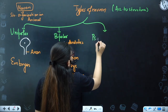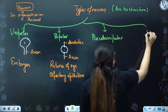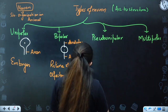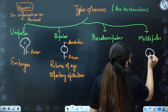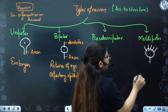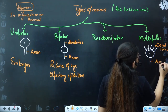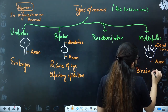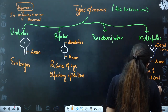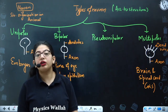Then we have another category: Pseudo-Unipolar, and another is Multipolar. Multipolar is the one we have drawn in that chapter as well. It has a lot of dendrites but one axon. Hence you call it as multipolar. Multipolar neurons are found in the brain and spinal cord, which are collectively known as the CNS. The neurons of the central nervous system have the multipolar type of neuron.